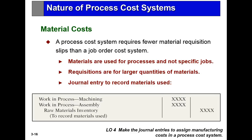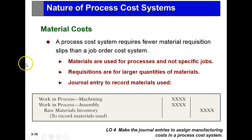How do we handle material costs? The process cost system requires fewer material requisition slips than in a job order cost system — they're used for processes, not for specific unique jobs. Requisitions are for big numbers. Some materials go directly into machining and some go directly into assembly. Large volumes, fewer unique items — they just get put right into raw materials and flow into one of the various processes.